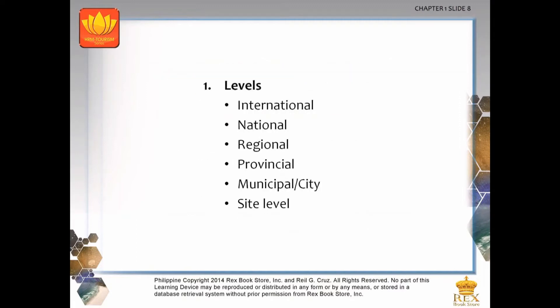Tourism planning can be done on different levels. At the international level, tourism planning typically involves international transportation services, the movement and scheduling of tours among different countries, the development of major tourist attractions and facilities in neighboring countries, and the working strategies and promotional programs of many nations. The next level is the national level, which is concerned with tourism policy, infrastructure, facilities and a physical structure plan.